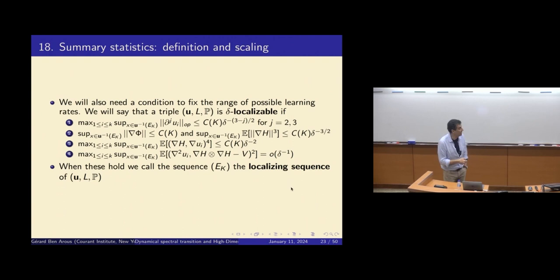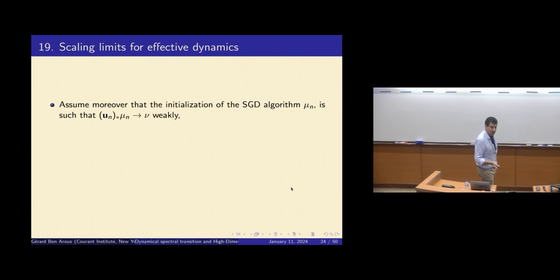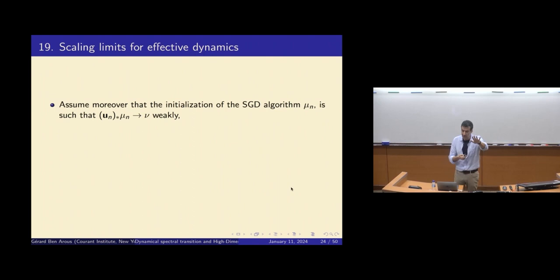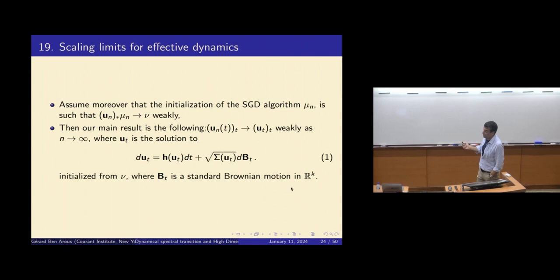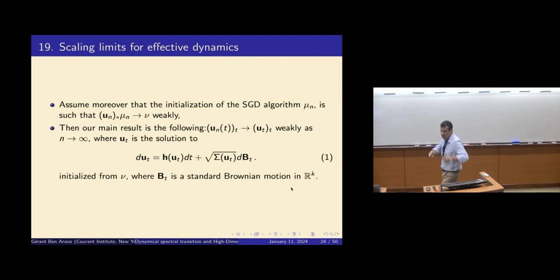I define first-order and second-order differential operators: A, which is grad phi times grad, and L, which is one-half of V times grad squared. I assume that A plus delta times L applied to U minus some H(U) converges locally uniformly to zero — that this is essentially a function of U. That's not surprising: I want autonomous dynamics, so I assume this is essentially a function of U. Under these conditions plus bounds on derivatives, and assuming the projection of the initialization converges, the main result is that the evolution is autonomous and given by this SDE with drift H(U). In most cases, the diffusion sigma will be zero — it will just be an ODE.